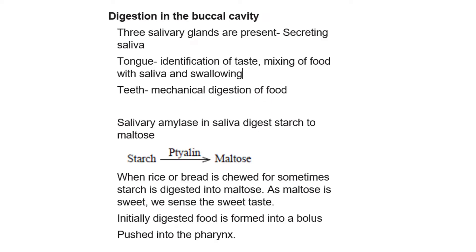Within the mouth, or buccal cavity, it consists of teeth, salivary glands, and tongue. Three salivary glands are present in the mouth and are involved in secretion of saliva, which mixes with food. The tongue is involved in mixing food with saliva, aiding in swallowing food, and identification of taste. The teeth are involved in mechanical digestion of food.